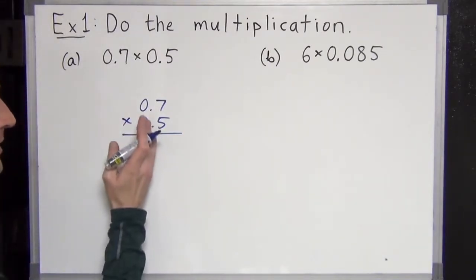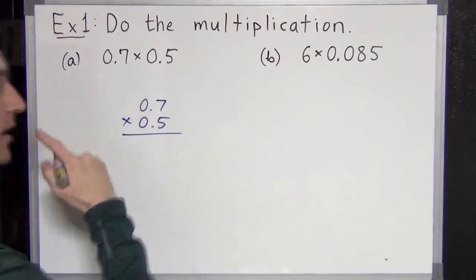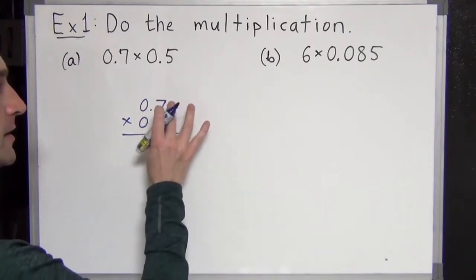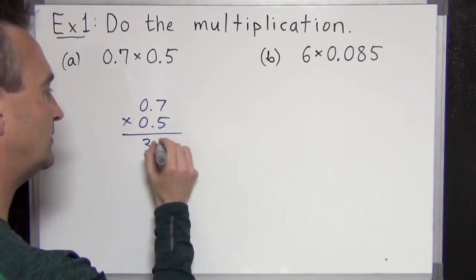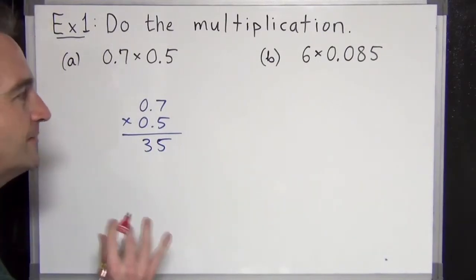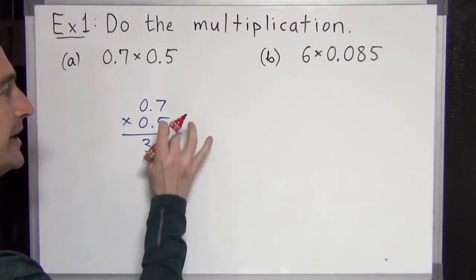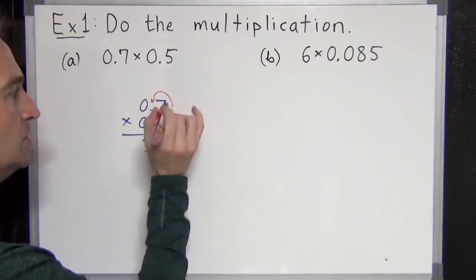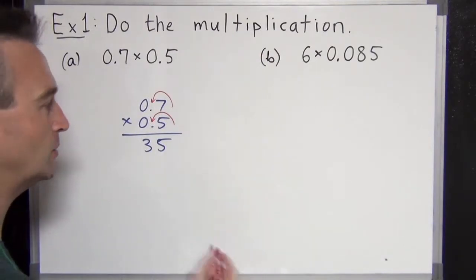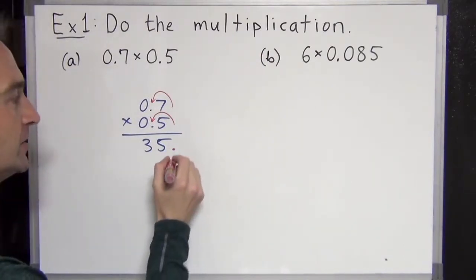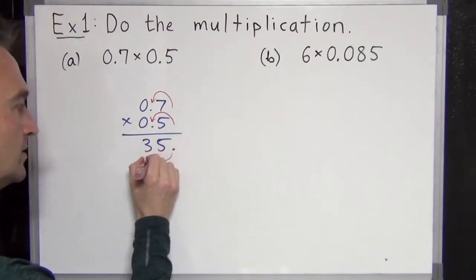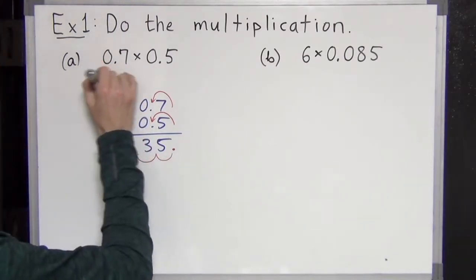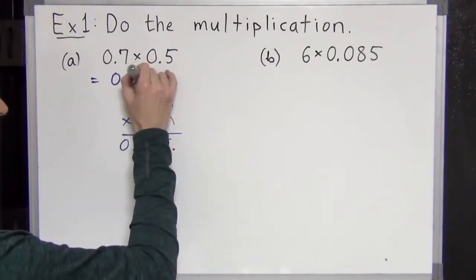And what we do is we just ignore the zeros on the far left and the far right. We just multiply like normal. We worry about the number of decimals later on. So here we go. We just use 5 times 7 is 35. But we need to find the number of decimal points in the answer. So what we do is we count the total from the question. One decimal point. Two decimal points. So two decimal places total. Here we imagine the decimal starts here and we go two decimal places that way. One, two. So our answer is going to be 0.35.